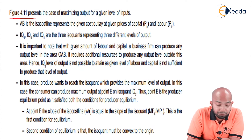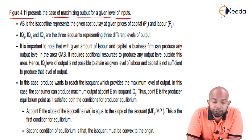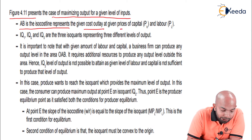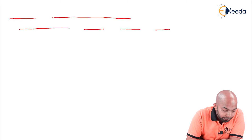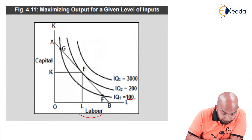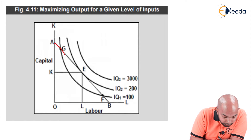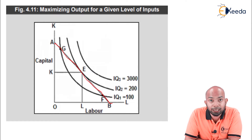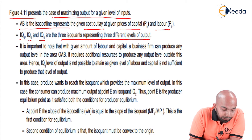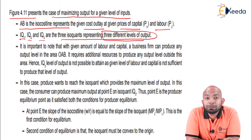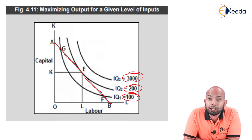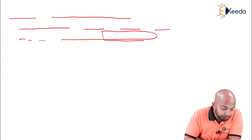Figure 4.11 gives out the case of maximum output for a given level of input. AB is the iso-cost line representing the cost outlay at given prices of capital Pk and labor Pl. IQ1, IQ2, and IQ3 are the three isoquants representing different levels of output — 100, 200, and 3000 respectively.